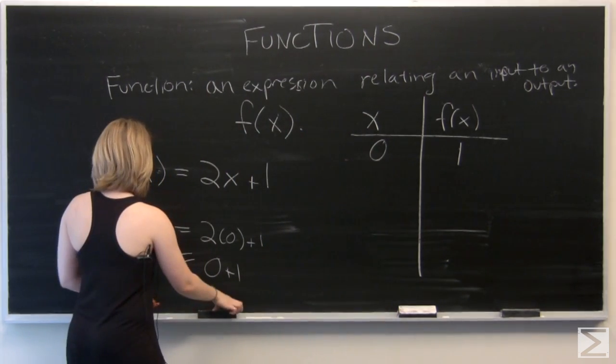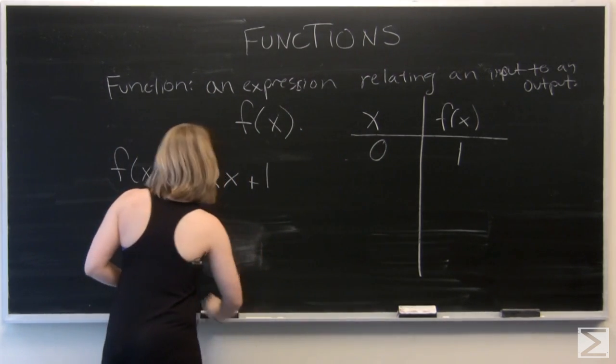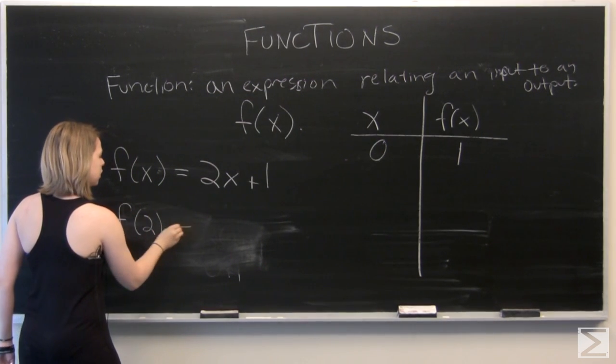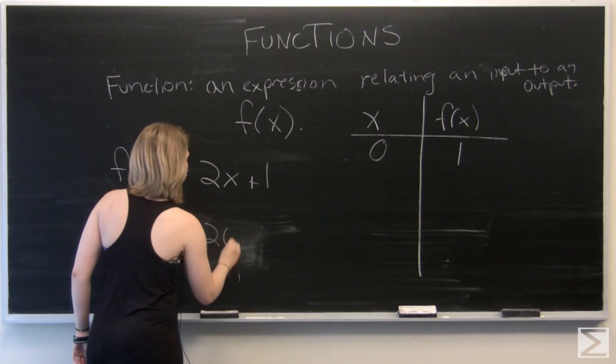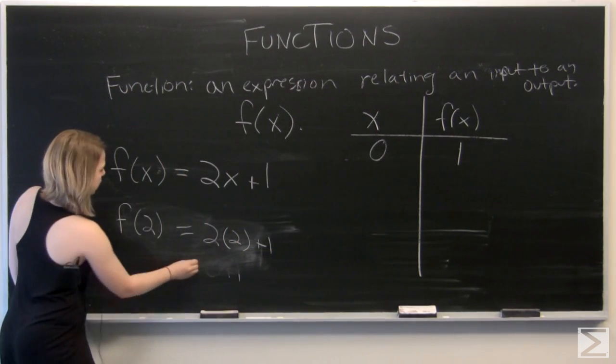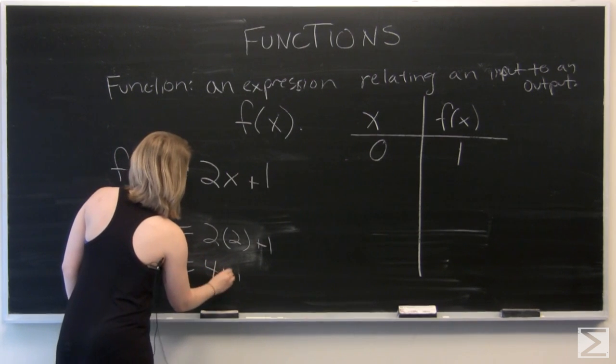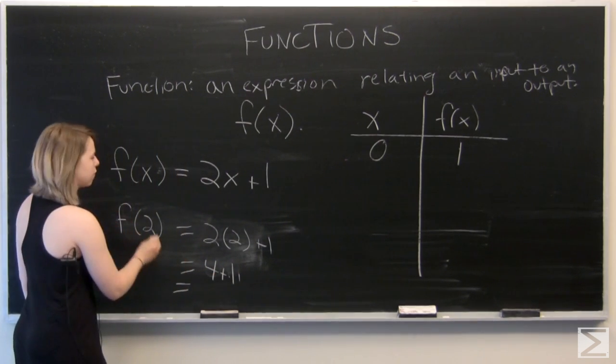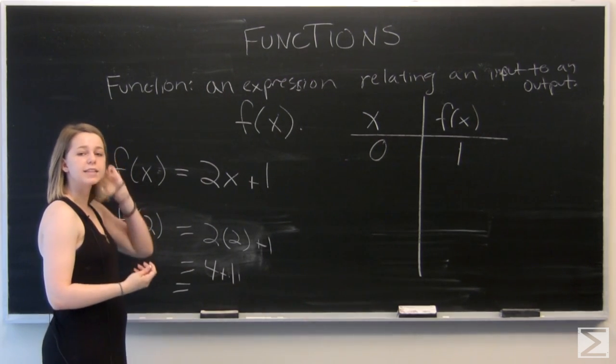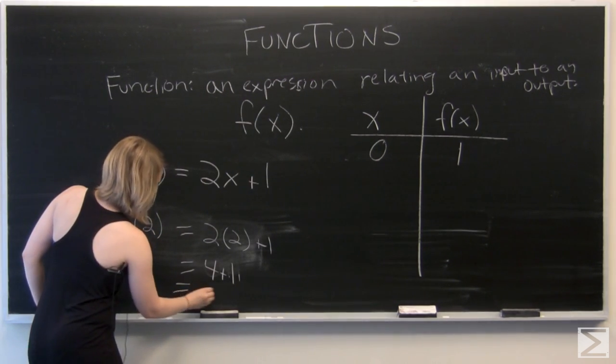Let's do another example. Instead of 0, let's do 2. So f of 2 is equal to 2 times 2 plus 1. And so we've got 4 plus 1. So our function, when we use 2 as our input, gives us 5.